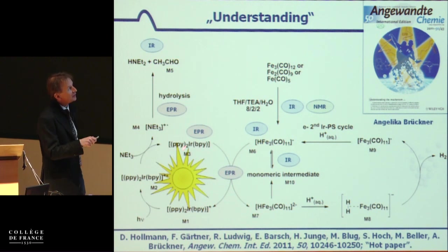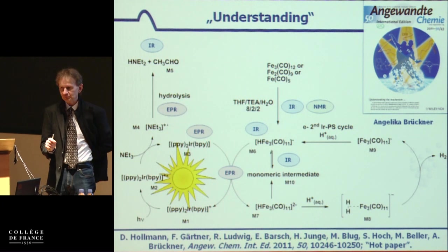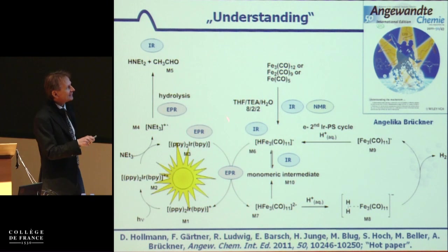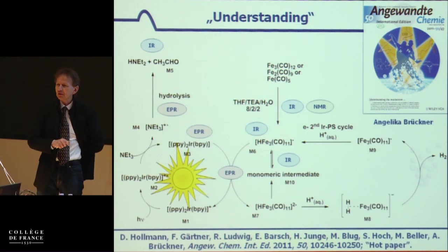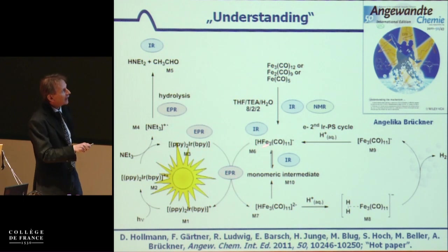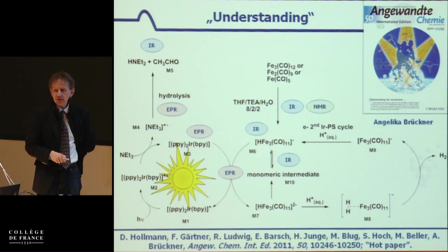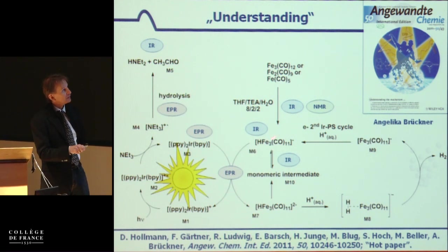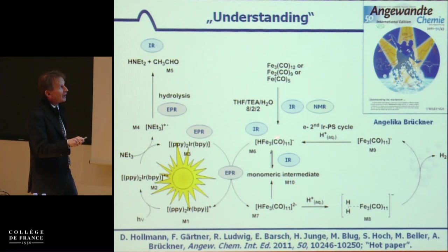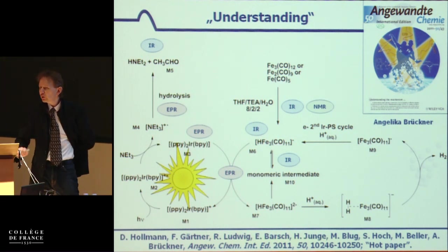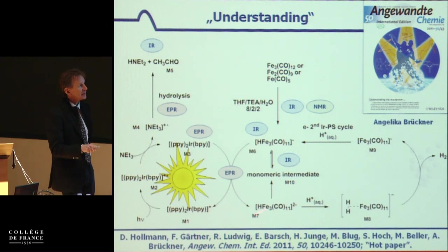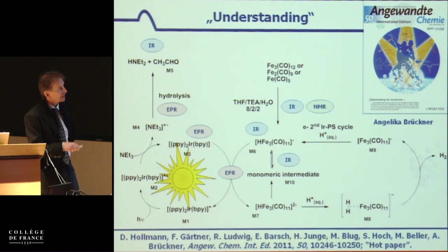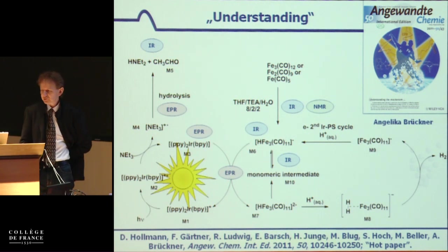The photosensitizer immediately — even at 20 Kelvin, which is very cold — transfers the electron in less than one second to the iron carbonyl species. The real proton reduction catalyst is not the hydrido tri-iron monocarbonyl anion, which was known long ago and is quite stable, but this very unstable di-anion. We also elucidated the deactivation pathways of this cluster catalysis.